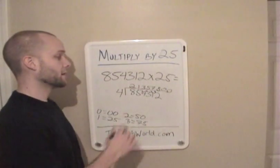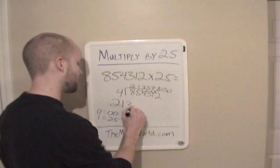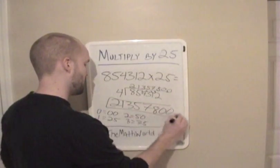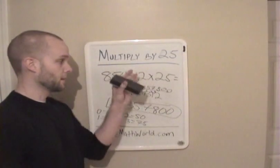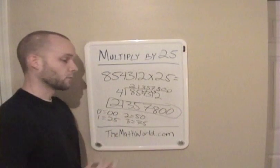So this large number times 25, we just solved it very easy. It's 21357800. And that's your answer right there. So this is how you multiply any number by 25. First divide by 4. And then depending on the remainder, add one of these to the end.